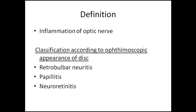Optic neuritis is the inflammation of the optic nerve. It can be classified according to the ophthalmoscopic picture of the optic disc. Ophthalmoscopically, if changes are seen, we can divide them into papillitis and neuroretinitis. Papillitis means changes that can only be seen on the disc, and neuroretinitis means changes seen both on the optic disc as well as the retina.